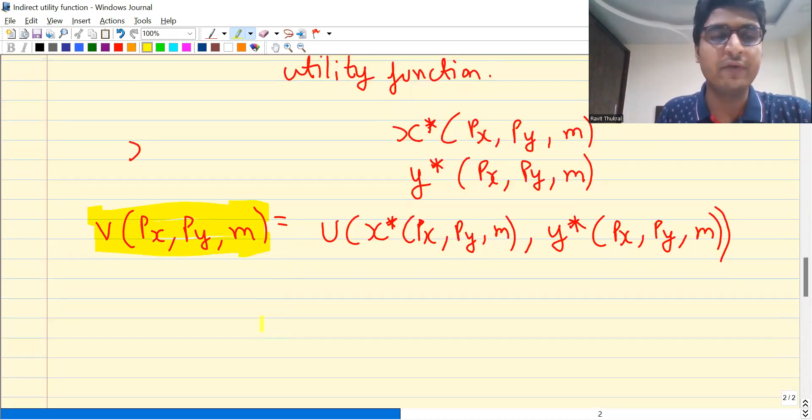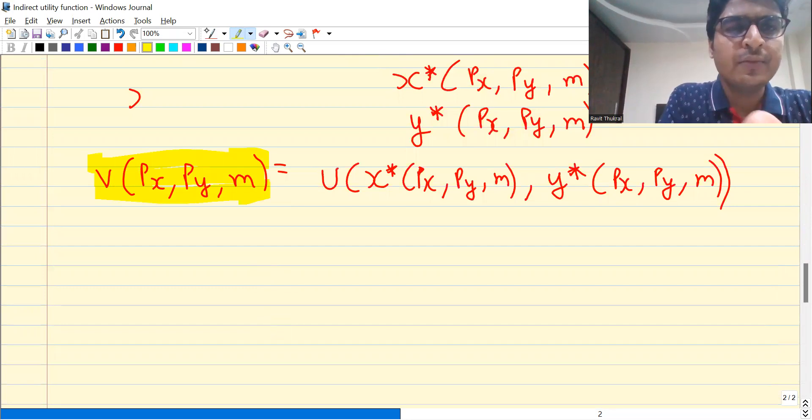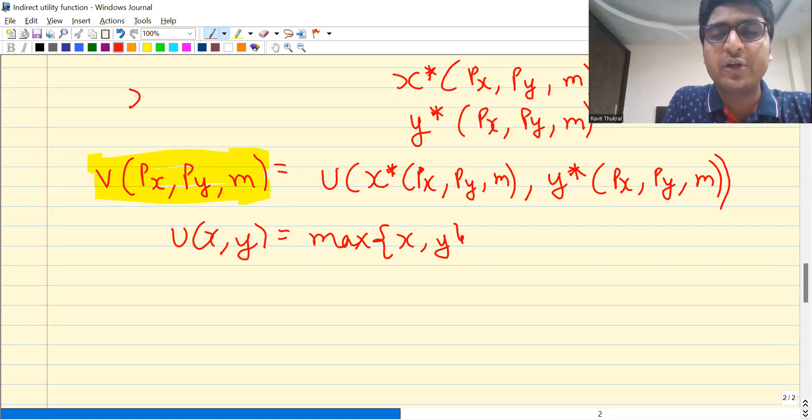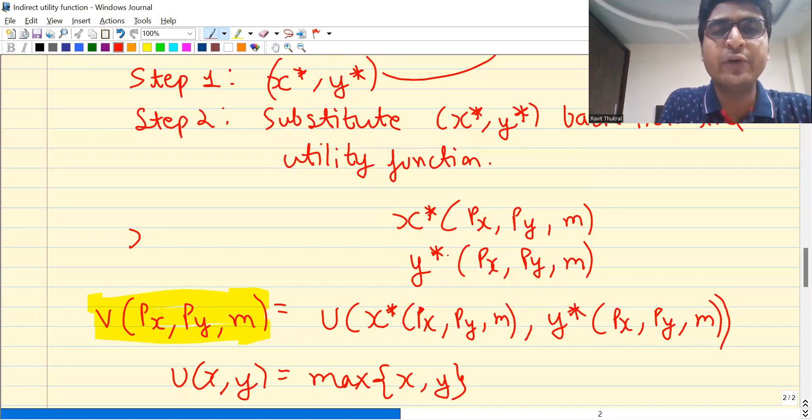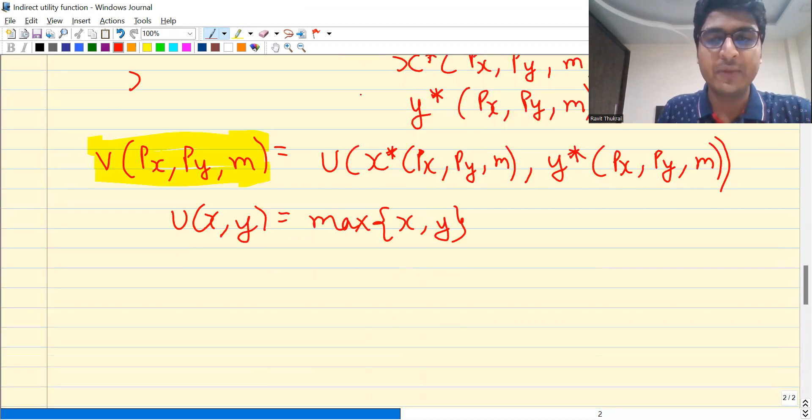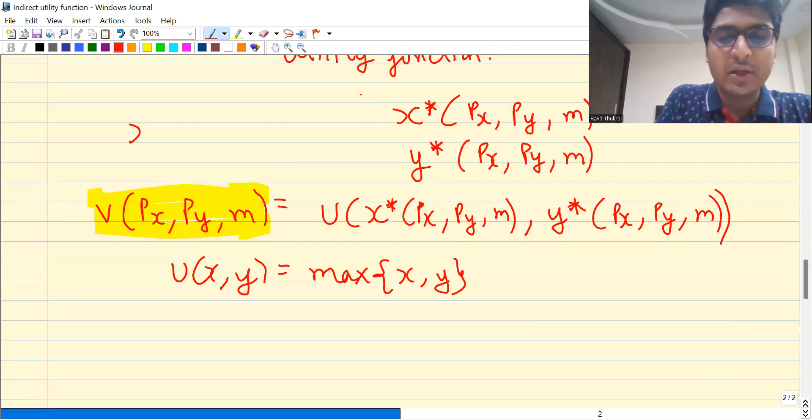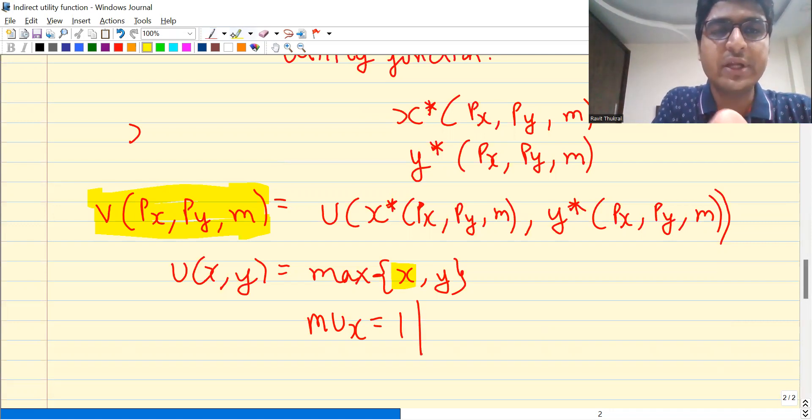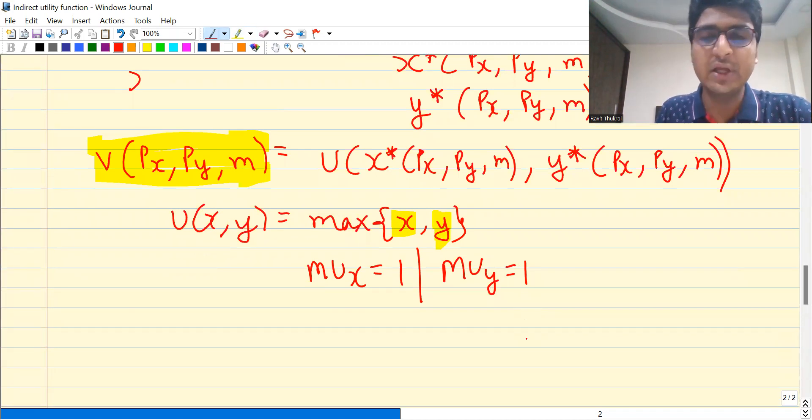For this utility function you need to find optimal choice. Simply by observing, I can say that if I take X individually, this is giving me marginal utility of one. And individually, Y is also giving me marginal utility of one. So marginal utility is constant, which is equal to one.